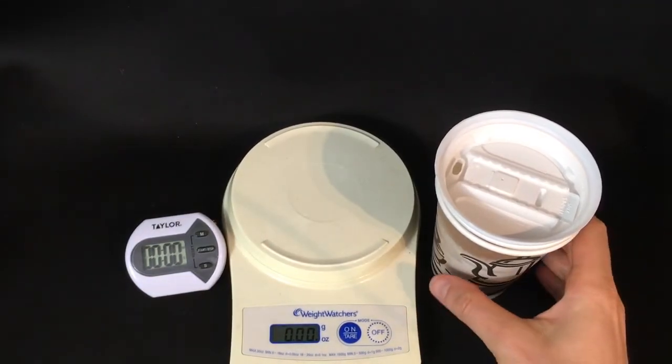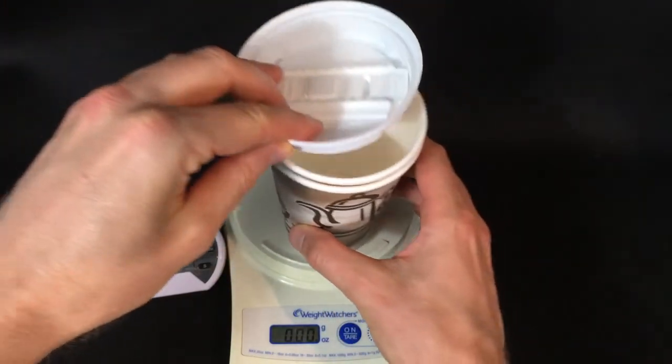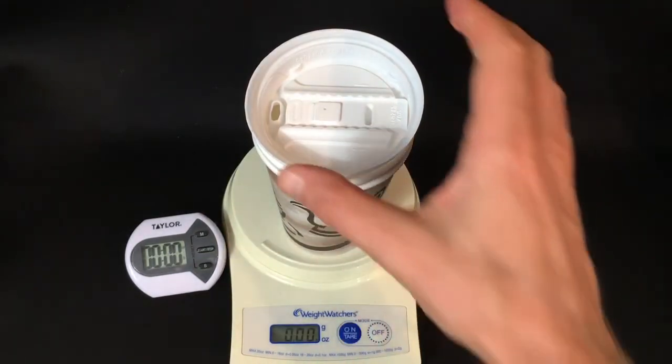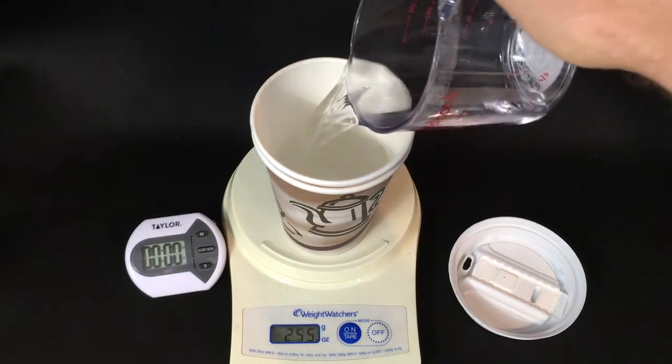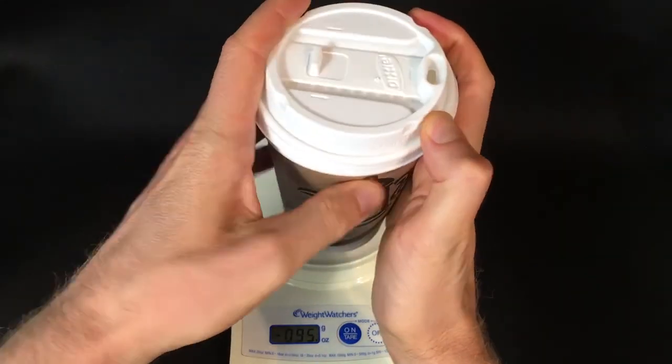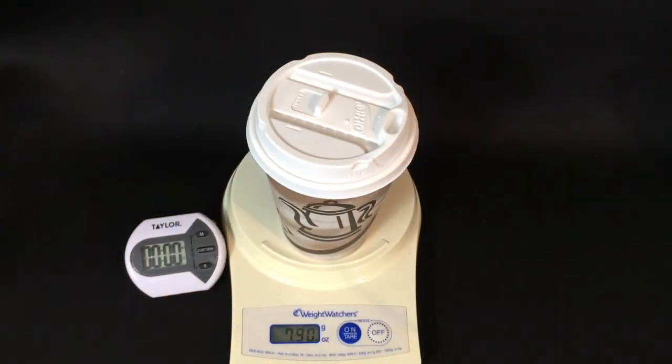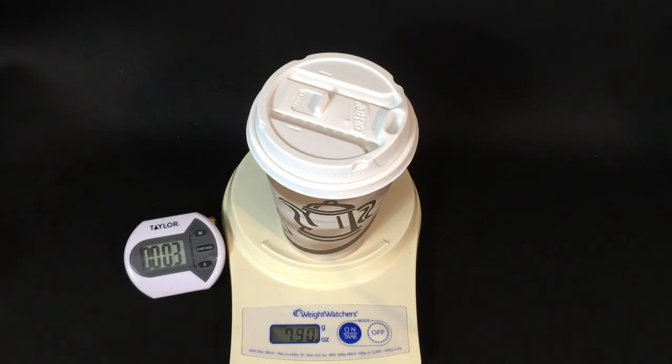With the same temperature water and the same amount of water, we're going to put it in a double coffee cup, a two-layered coffee cup with a lid. Let's tare the scale so it's starting off at 0.00 ounces. We'll pour in the water, put the lid on. Our starting mass is 7.90.